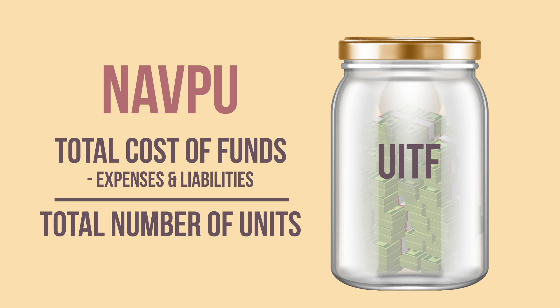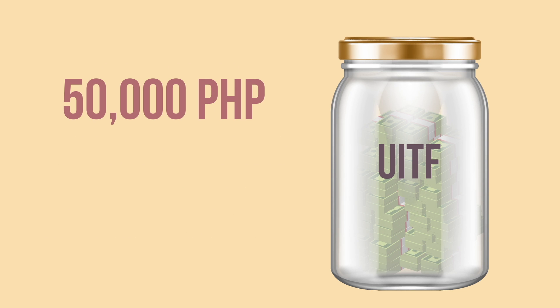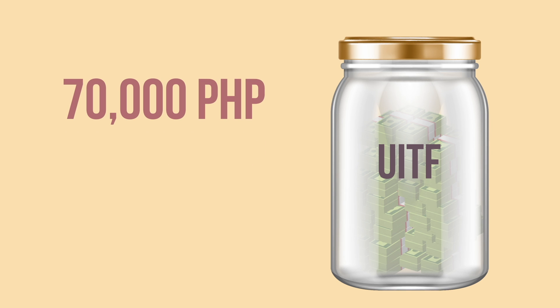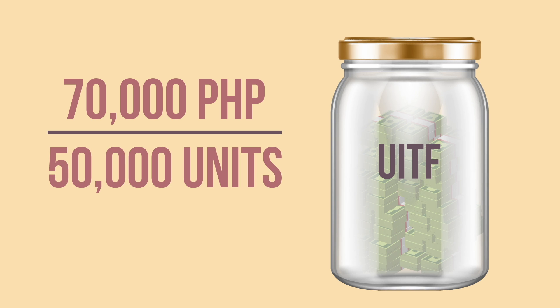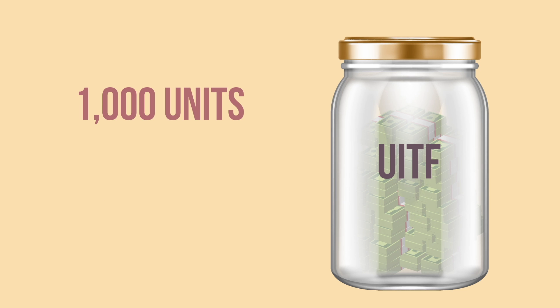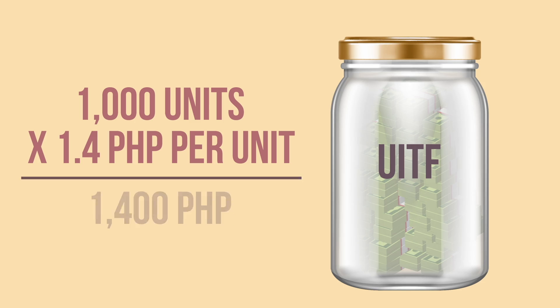Let's say the jar started with a total of 50,000 pesos with 50,000 units, and it increased to 70,000 pesos. The total NAVPU would be 70,000 pesos divided by 50,000 units, which is equivalent to 1.4 pesos per unit. So if you own 1,000 units, the value of your investment will already be 1,400 pesos, because 1,000 units times 1.4 is 1,400 pesos. If the NAVPU went up, your share is worth more and you've gained. But if it went down, it would be worth less.